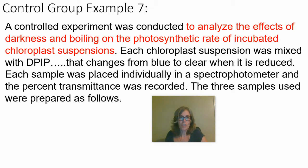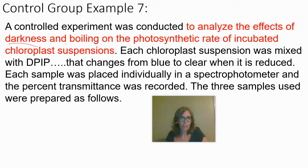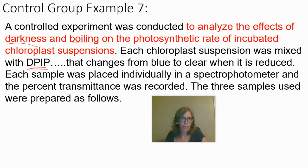The next example is tricky. A controlled experiment was conducted to analyze the effects of darkness and boiling on the photosynthetic rate of incubated chloroplast suspensions. Chloroplasts are the organelles in plant cells or algae that perform photosynthesis. With darkness or boiling, you'd expect reduced photosynthesis, and this study was designed to examine exactly those effects.